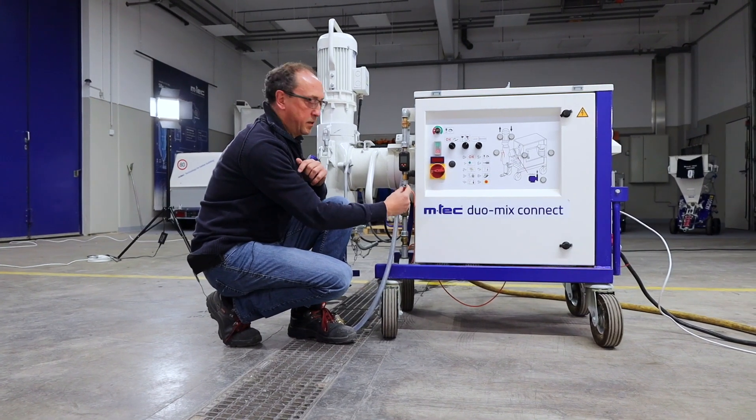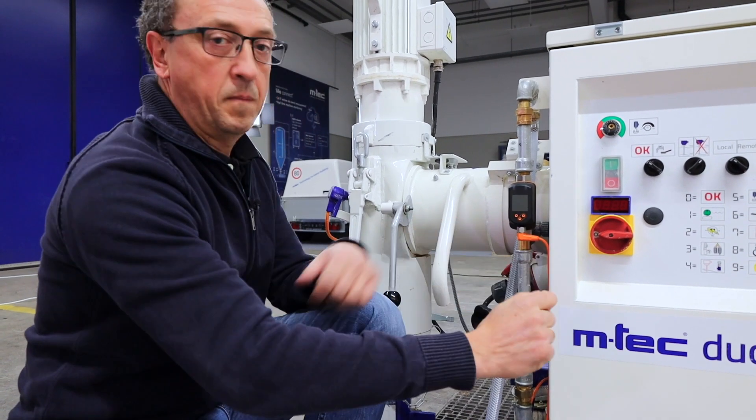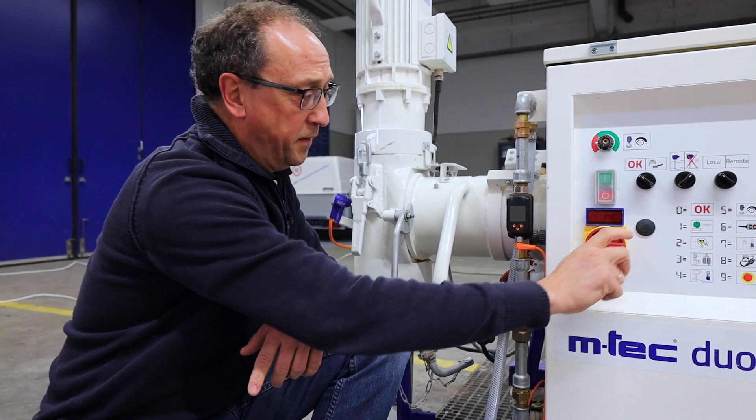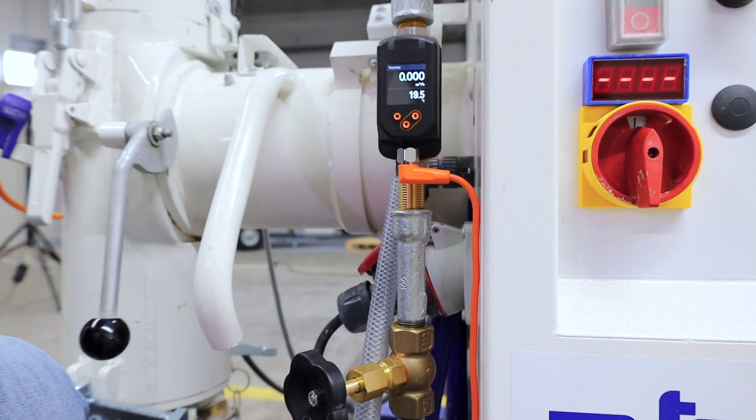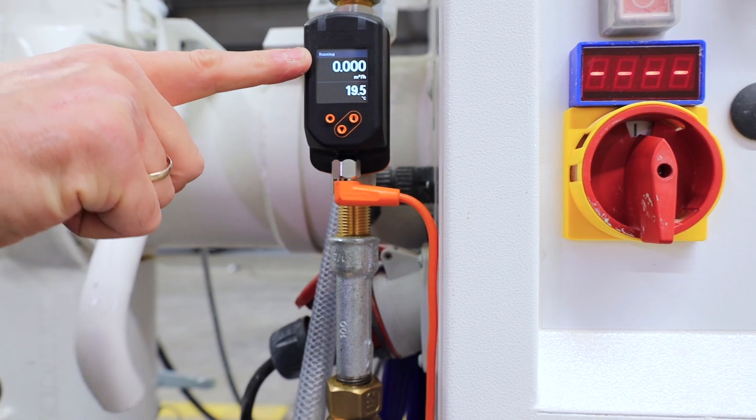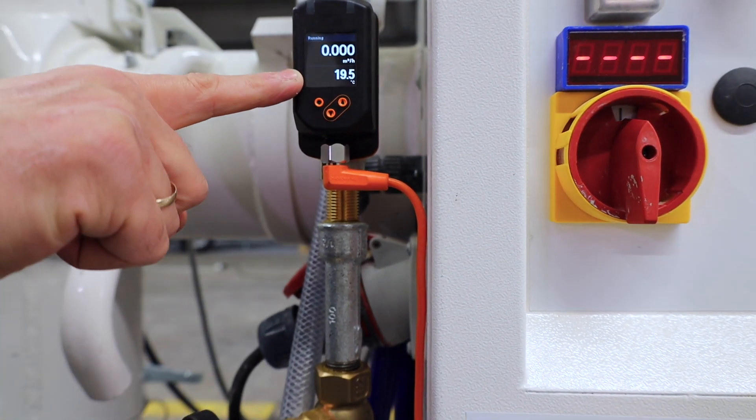Take the plug to the flow meter. Turn the main switch on. Now you can see the actual flow of the water and the actual temperature of the water.